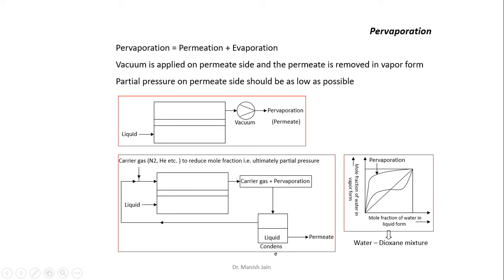The first question is: what is the benefit of vaporization in the membrane-based separation process? To understand this, we have to compare the pervaporation process with reverse osmosis. In reverse osmosis, we separate salt from water. The reverse osmosis membranes are selective for water, not for salt, and in salt-water mixtures, water is present at a higher concentration.